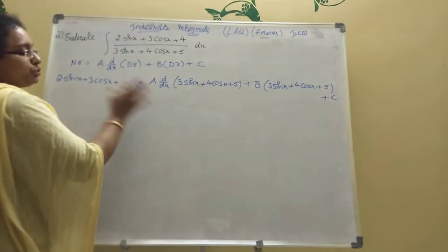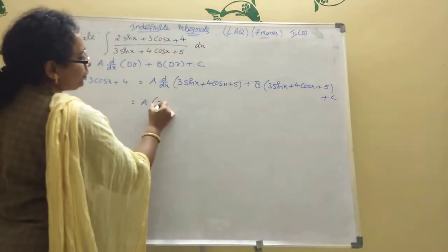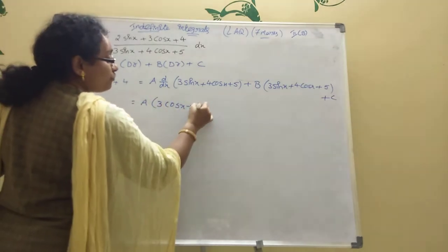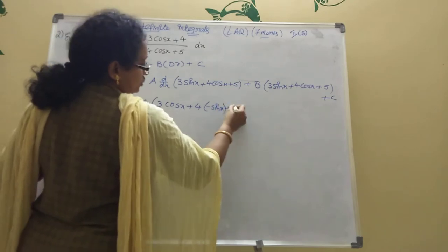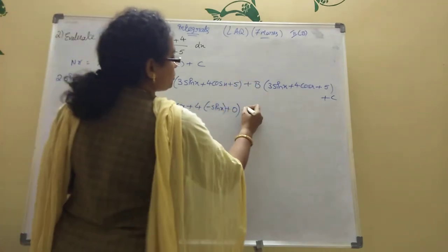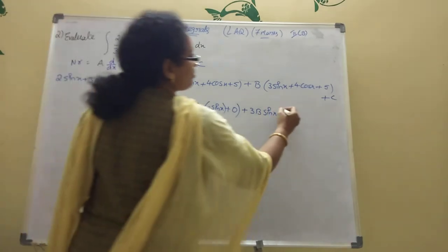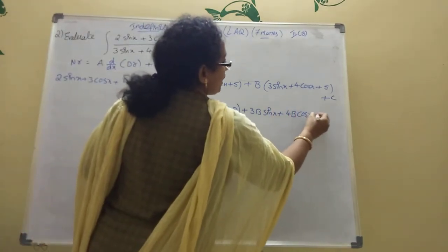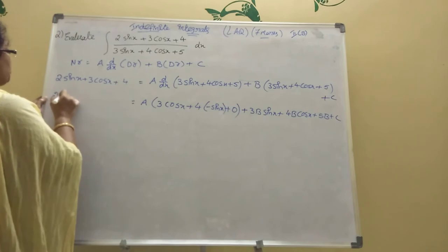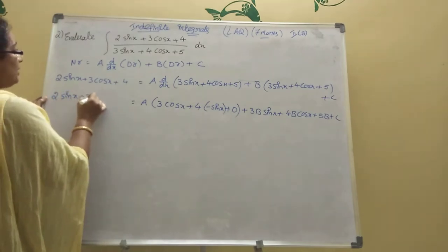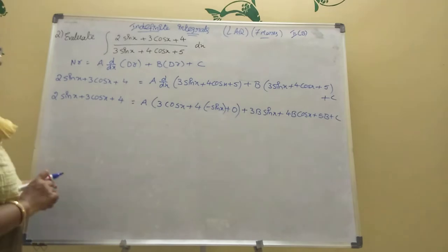Find d/dx of the denominator (3 sin x plus 4 cos x plus 5). Derivative of 3 sin x is 3 cos x, derivative of 4 cos x is minus 4 sin x, derivative of 5 is zero. So: 2 sin x plus 3 cos x plus 4 equals A into (3 cos x minus 4 sin x), plus B into (3 sin x plus 4 cos x plus 5), plus C. Now comparing on both sides for sin x and cos x coefficients.